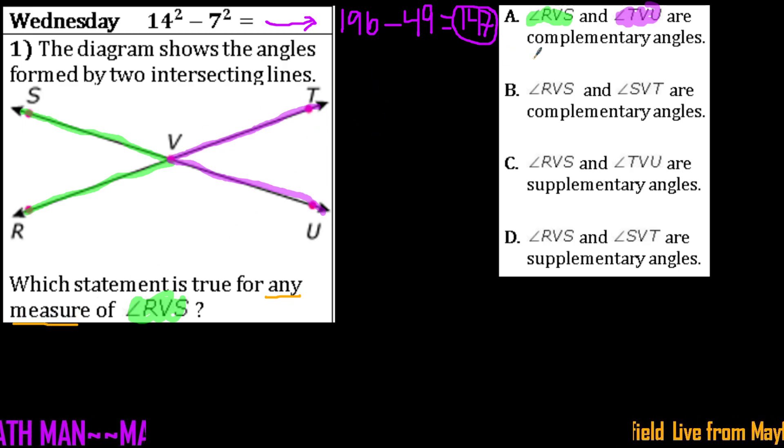And it says for any angle measure for RVS, well, we know complementary means their sum is 90 degrees. And since we don't necessarily know the angle measure for those angles, we can't necessarily say that it's true.